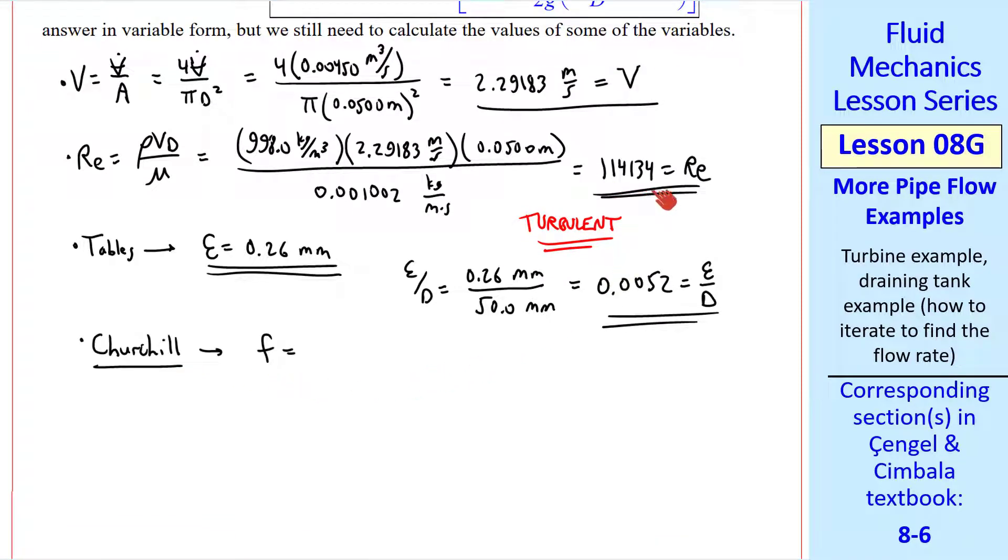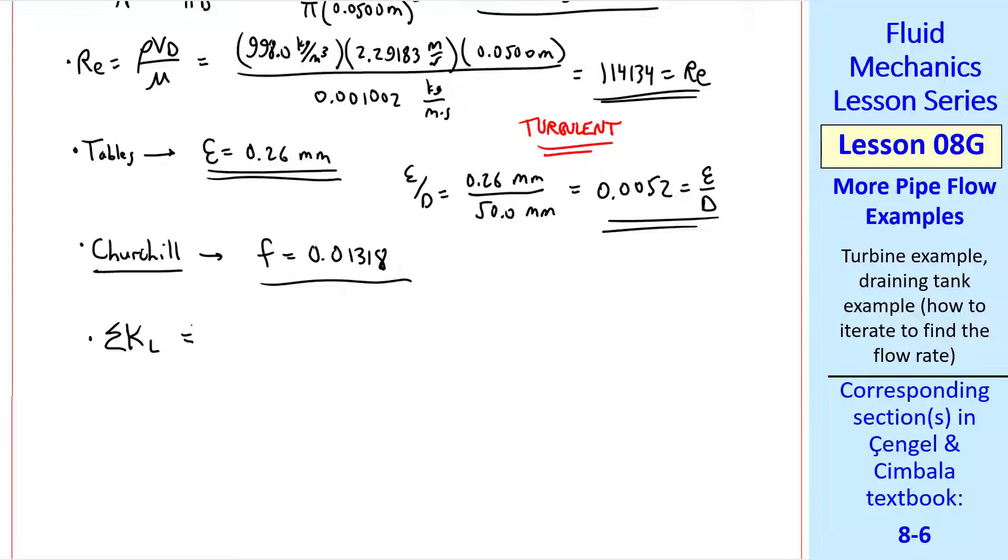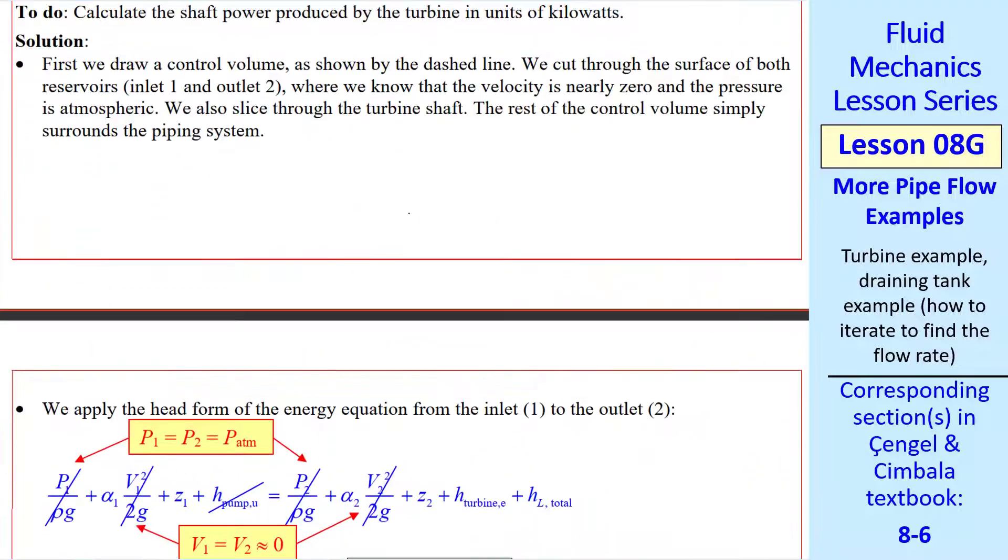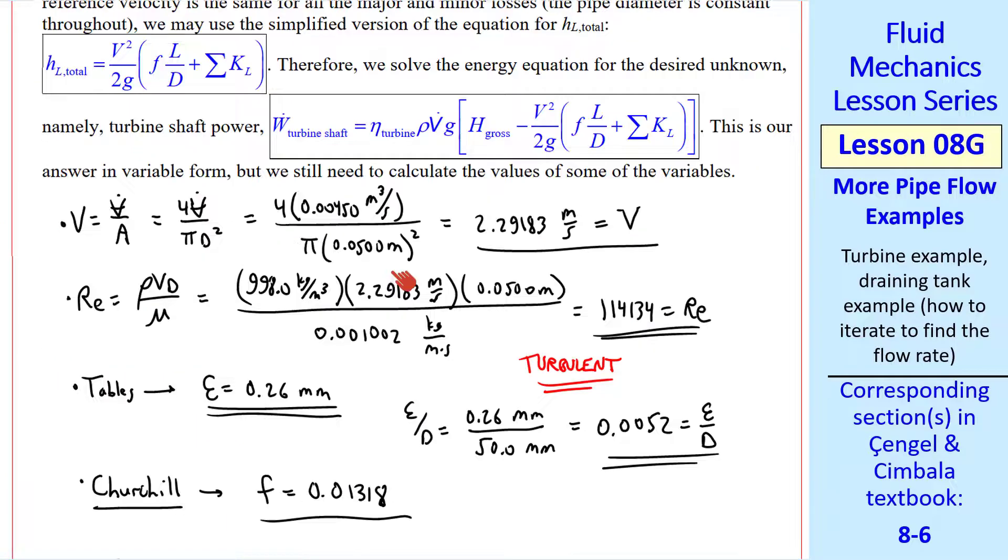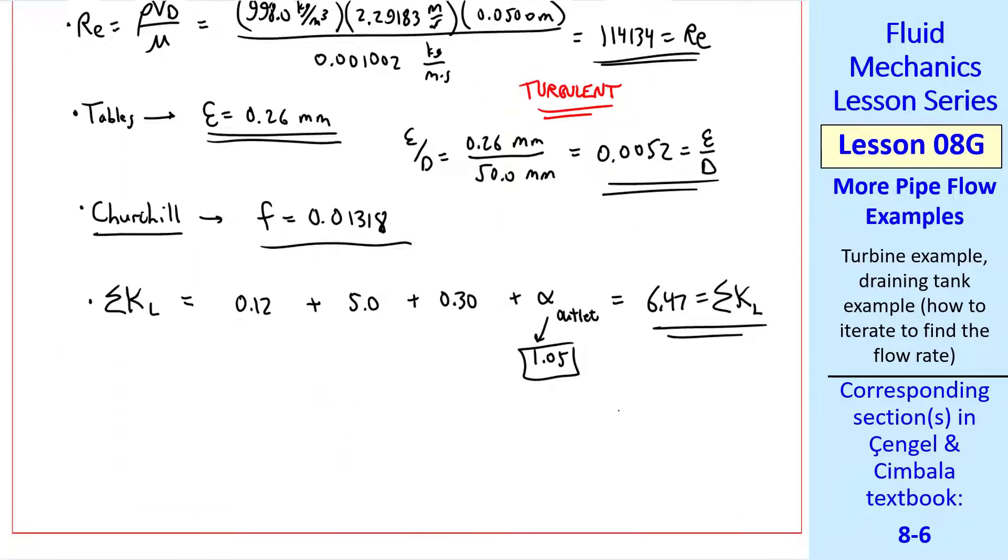The Churchill equation at this Reynolds number and this non-dimensional roughness gives F equals 0.01318. Now we calculate the sum of all the minor loss coefficients. We look these up again in the tables. This is our inlet, our angle valve, our elbow, and alpha at the outlet. I'll let this be 1.05 since we have turbulent flow. Again, as a review from last lesson, when you have your outlet enclosed by the control volume, this turbulent jet is included as a minor loss. So we add up all the minor loss coefficients, and we get 6.47.